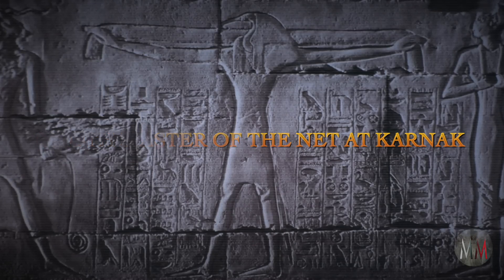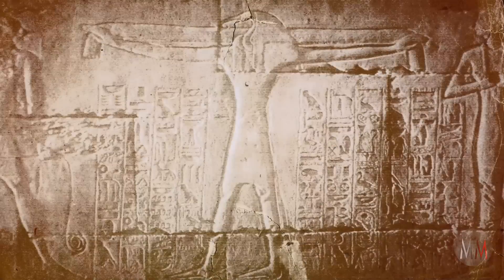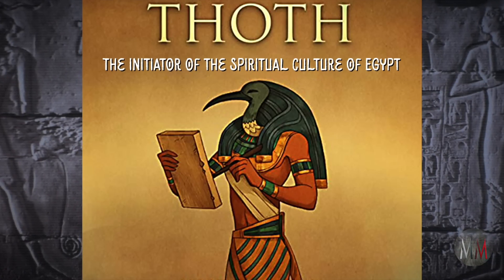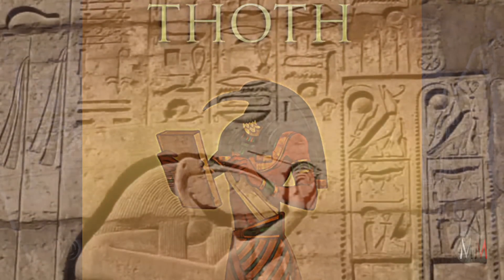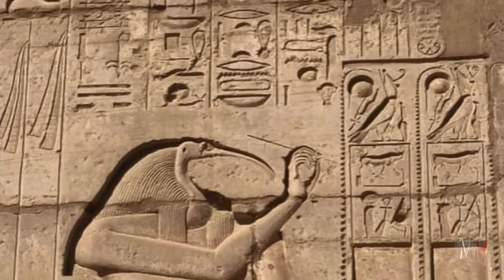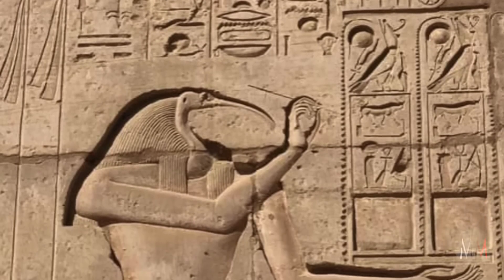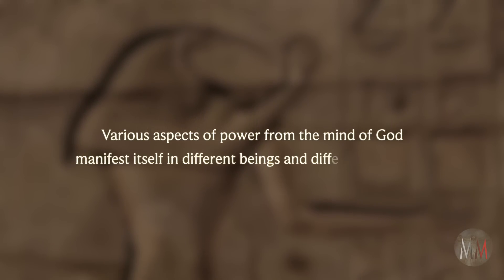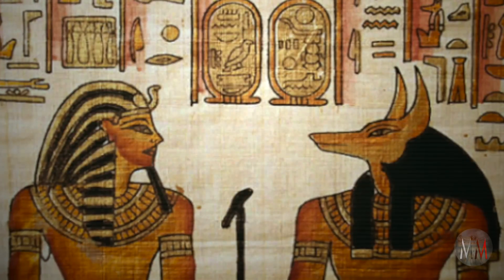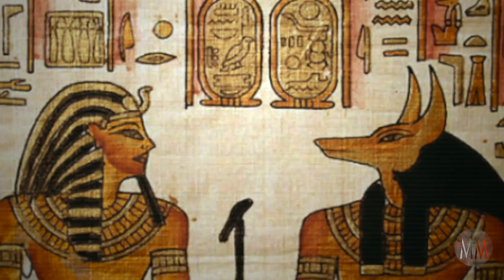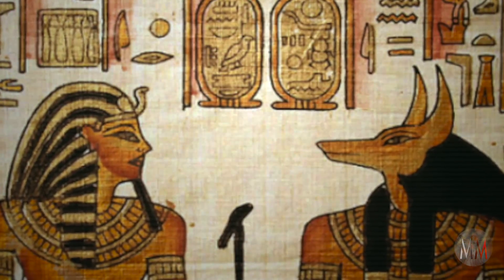The first thing to be aware of is that this particular being was considered to be the initiator of the spiritual culture of Egypt. When the Egyptians used the head of an animal, it represented a state of consciousness and a type of primordial power. It wasn't that they worshipped animals — they understood that various aspects of power from the mind of God manifest in different beings and processes, and that state of consciousness manifests in particular animals, which then have the animal head on the body of a human being.